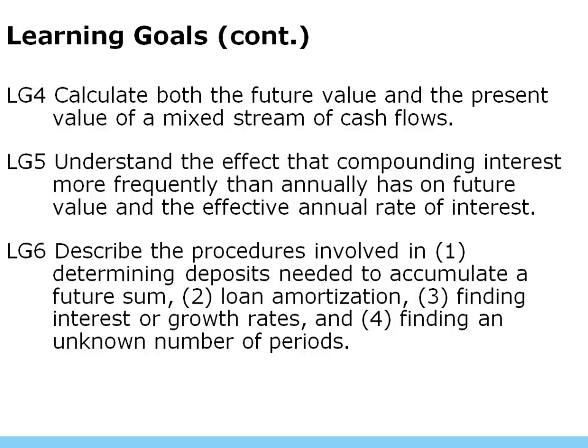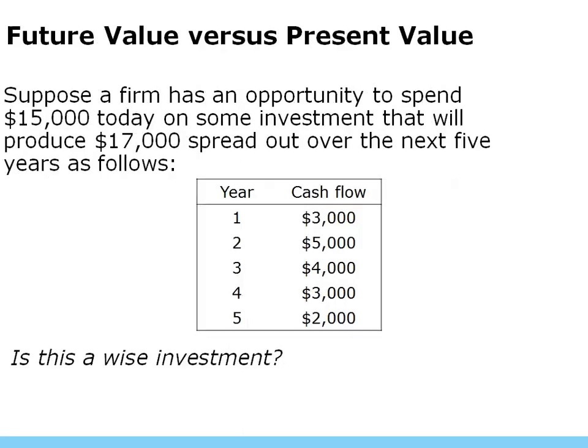We're going to understand the compounding interest frequency, and we're going to describe the process involved in determining deposits needed to accumulate a future sum, a loan amortization, finding interest and the growth rate, and finding an unknown number of periods.